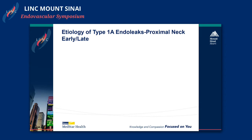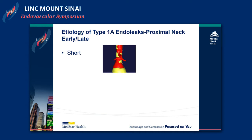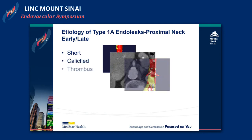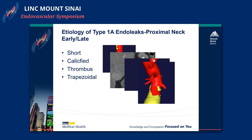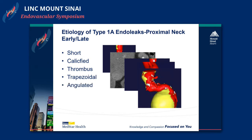When we think about type 1a endoleaks in the etiology, it's really related to something wrong with the proximal neck. These endoleaks can occur early, as early as the index procedure, and they can often occur late, even years beyond the initial implantation. It typically has something to do with the proximal seal zone that has compromised that seal. You can have a short aortic neck, a calcified aortic neck, thrombus lining the neck, a trapezoidal shape or angulation — all of these can create some type of compromise for that proximal seal, leading to an either early or late type 1a endoleak.